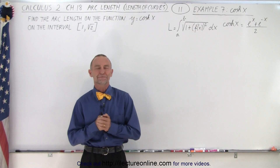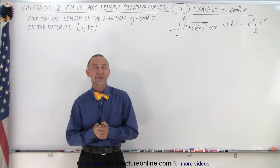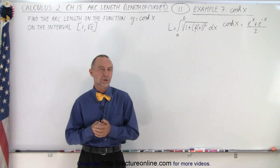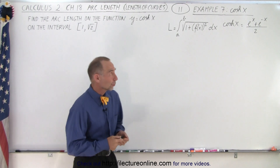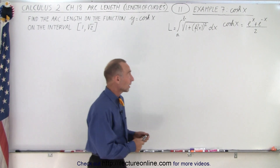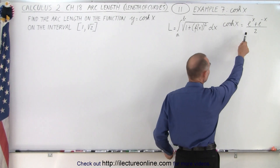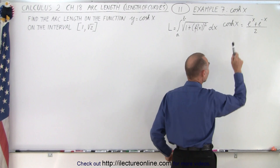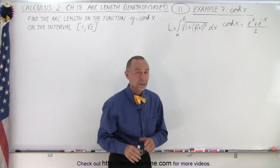Welcome to iLecter Online. Our next example deals with the hyperbolic cosine. We should remember that the hyperbolic cosine can be written as e to the x plus e to the minus x, divided by 2.